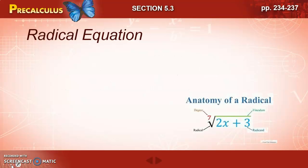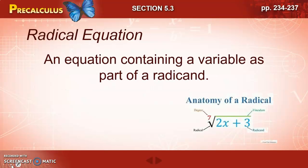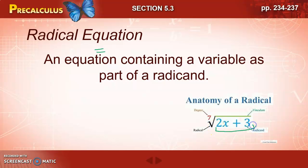Now let's talk about what a radical equation is. A radical equation is an equation containing a variable as a part of a radicand. We know an equation has an equal sign, and hopefully you remember that a radicand is the expression that's under the root symbol. So when you have a variable as part of that radicand, we call that a radical equation.